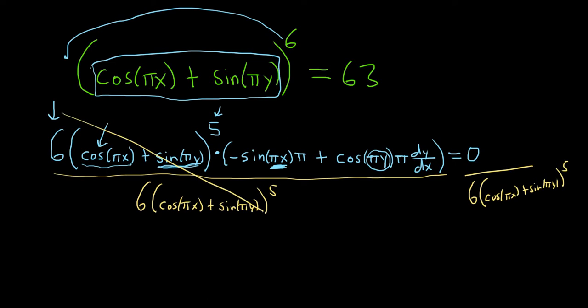I'm left with all of this stuff here. So we have, I'm going to go ahead and put this π up front. So we have negative π sine πx plus, and then π cosine πy dy/dx. And this is all equal to 0 over here.